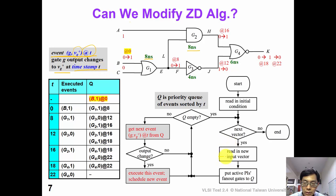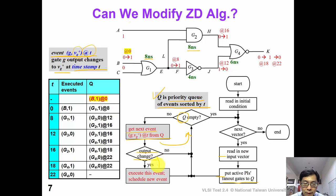Every time we read in a new vector, we put activated primary inputs' fan-out gates to the queue. The event queue is now a priority queue of events sorted by timestamp t. Every time we pop out one event with the smallest timestamp t from the queue and check if the gate output changes or not. If the gate output does not change, we move on to the next event. If it does change, we execute this event and schedule more new events. This loop continues until there are no more events in the queue.